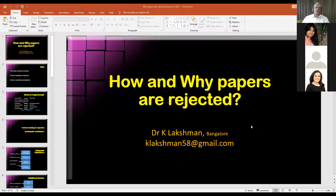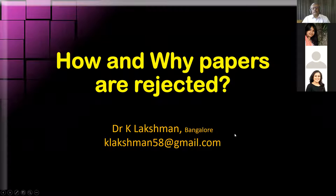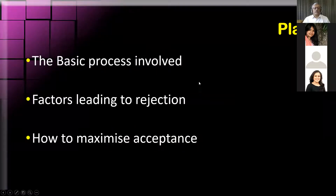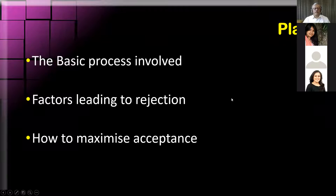Thank you. All right. So if we look at why some papers might get rejected, we may have a better idea of how we go about writing and submitting a paper. The best way to know is to know what happens when you submit a paper. By a process of reverse engineering, looking back at how papers are evaluated, you will get a better idea.